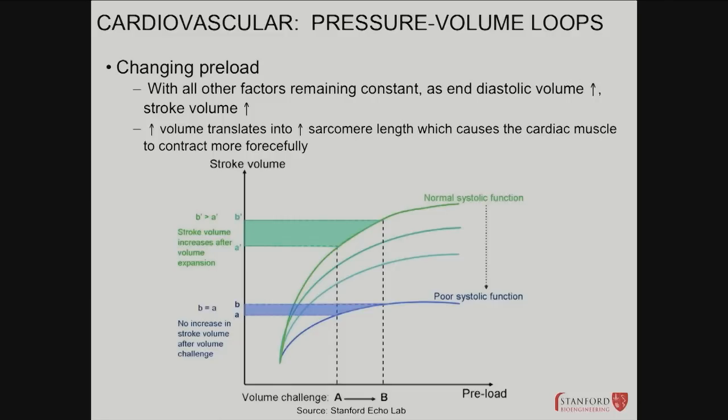Let's say the green line is normal function on the graph. As you increase the end-diastolic volume from point A to point B, the amount of blood the heart pumps out in one beat — the stroke volume — goes up. At point A it pumps out this much, and at point B it pumps out more, so you get this extra stroke volume.